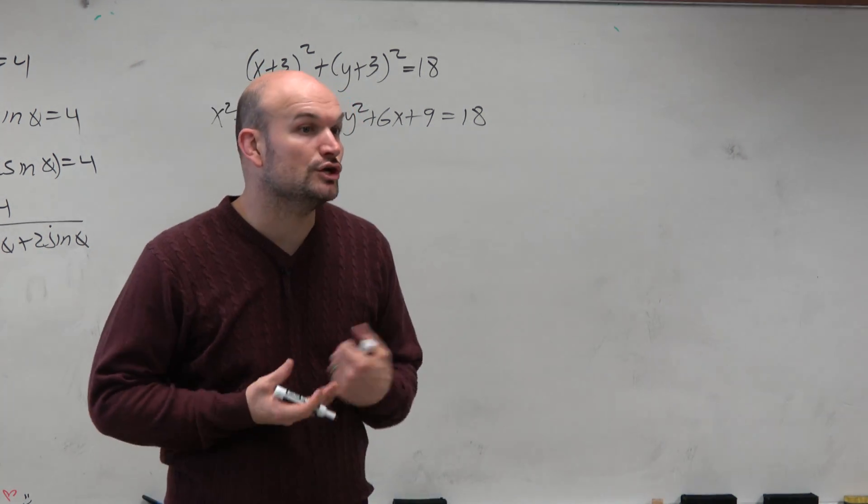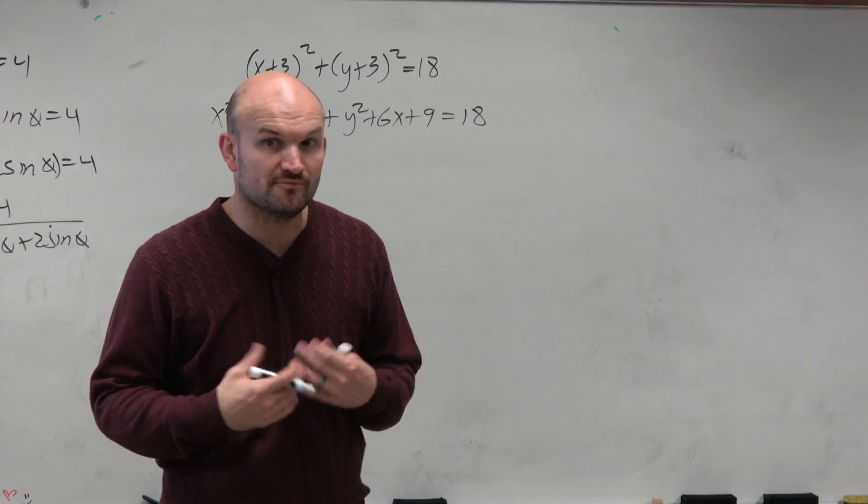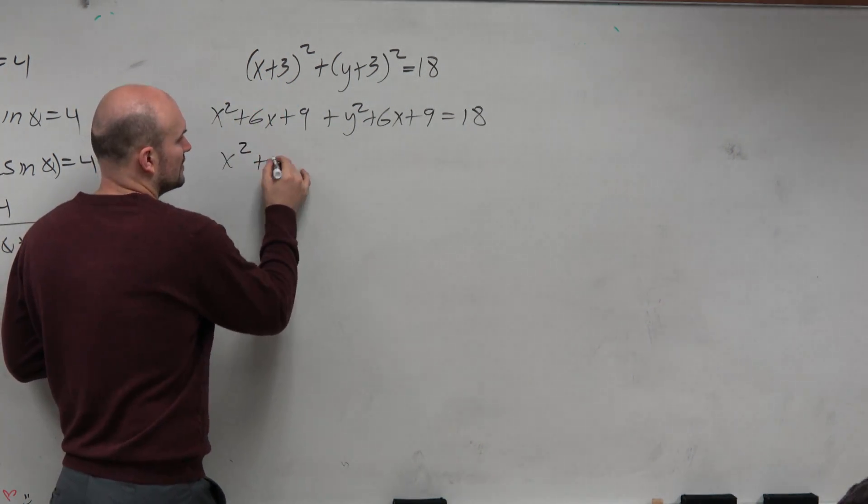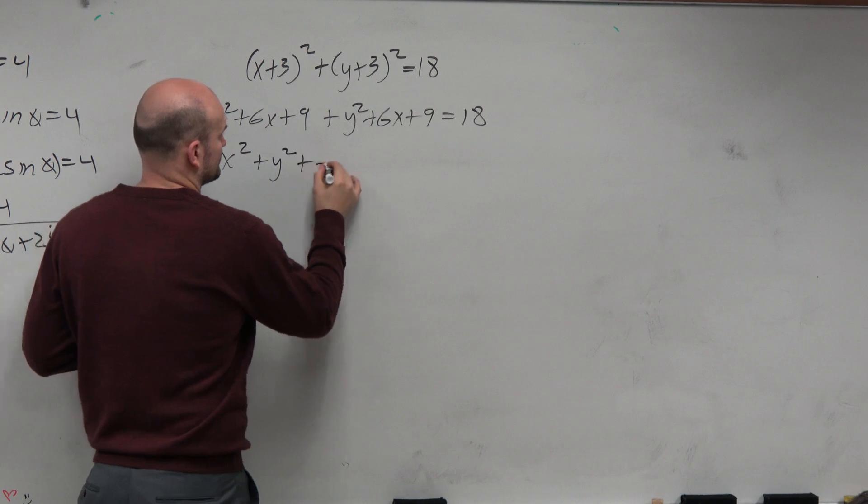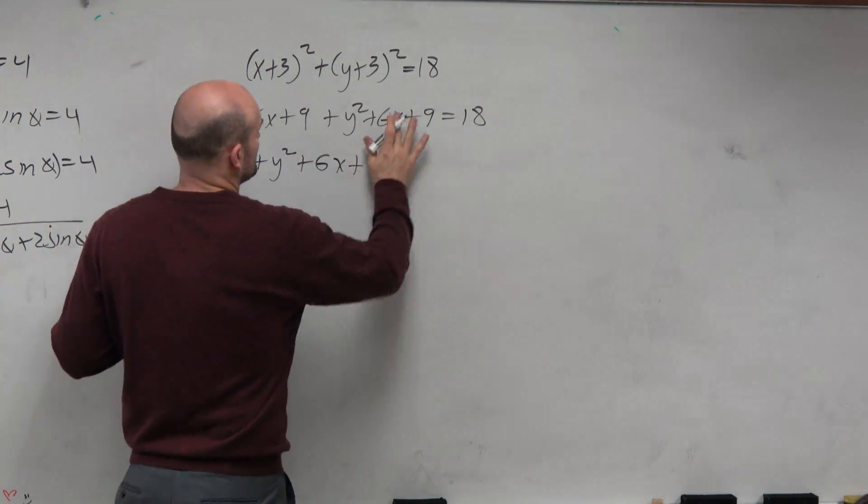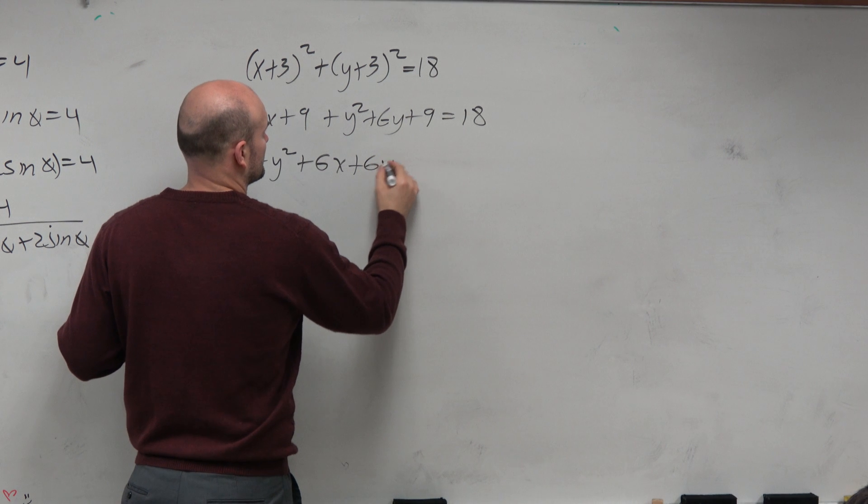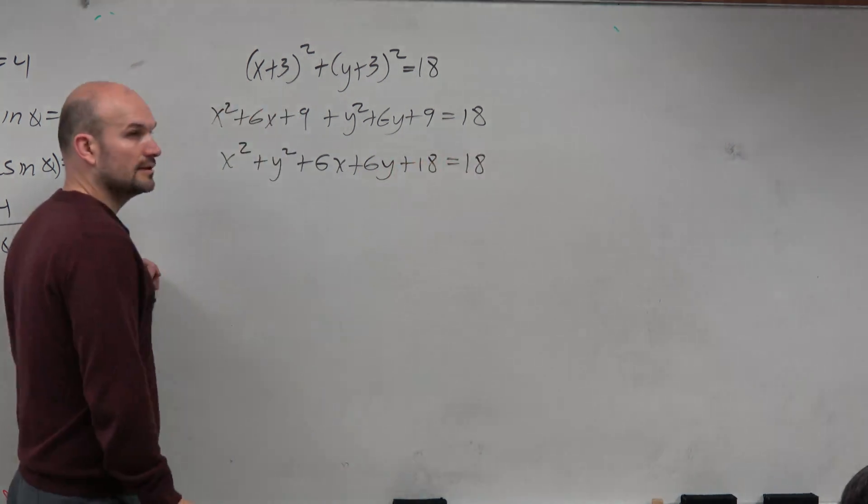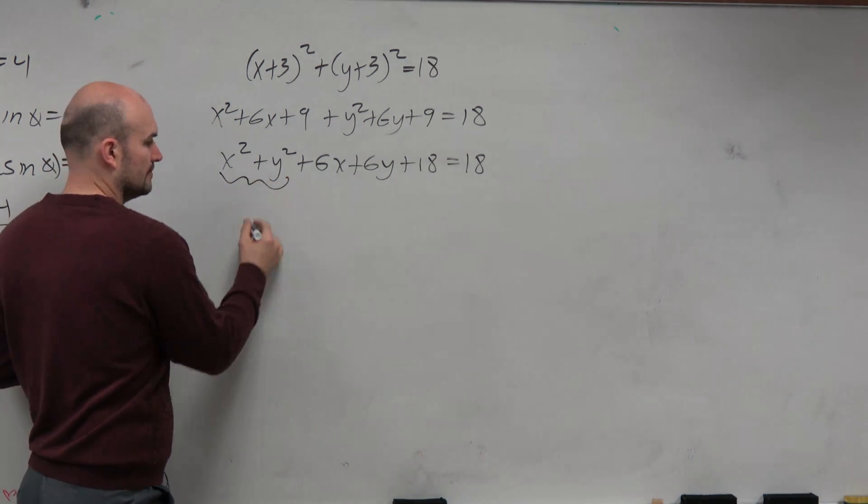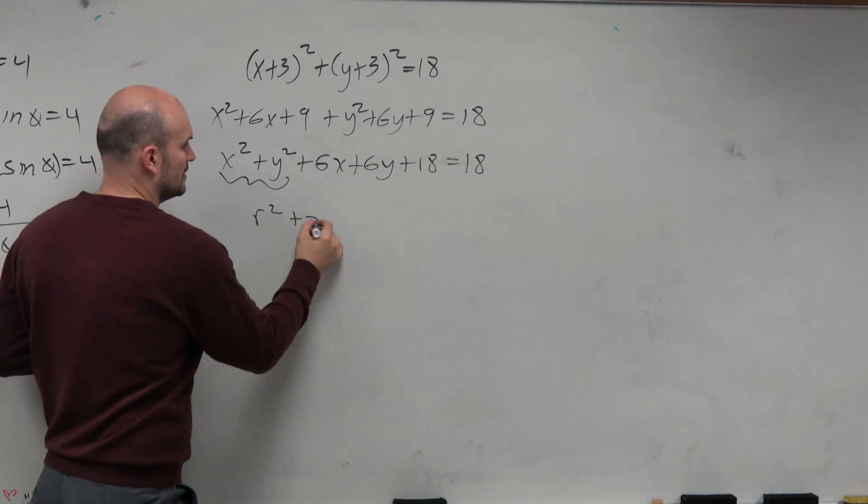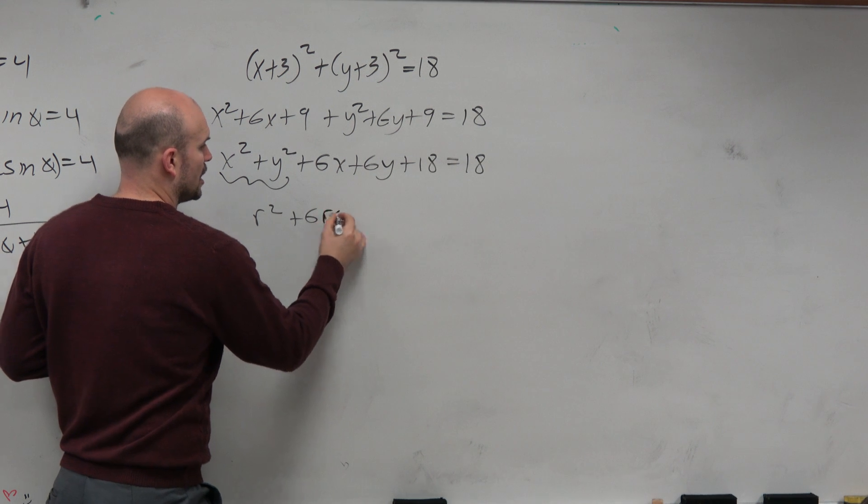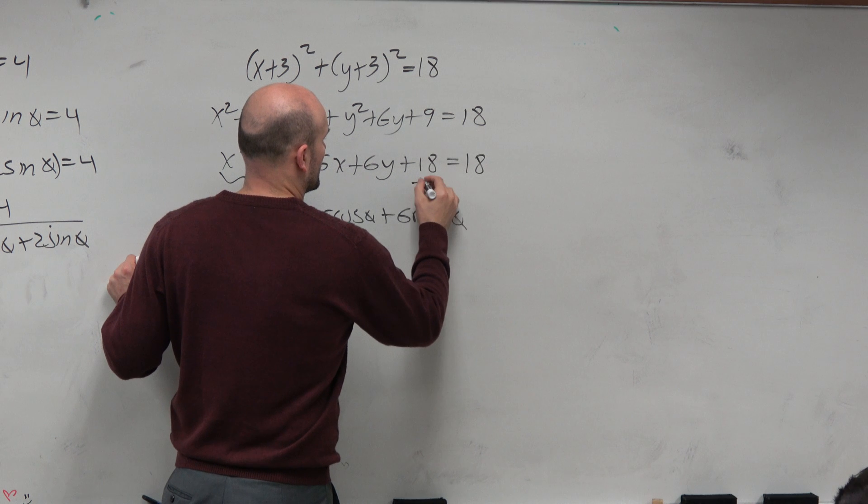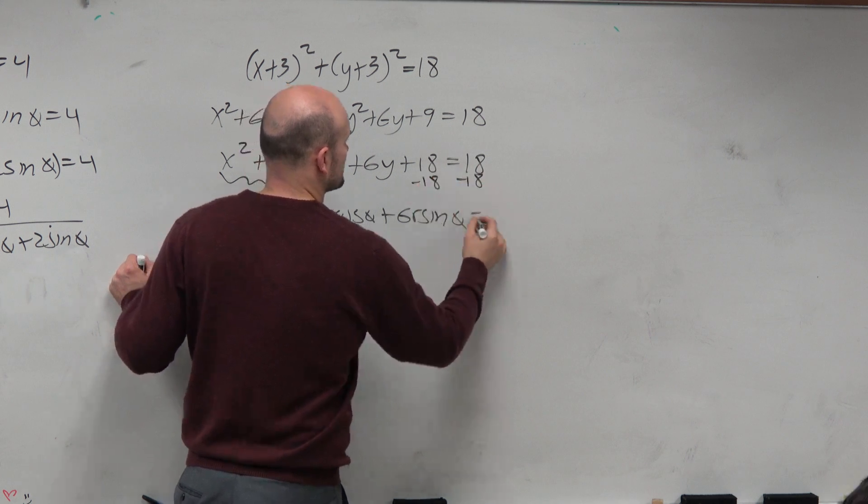Now, in this case, again, my goal is to rewrite this in terms of polar, in terms of r's and thetas. So what I'm going to do now is I'm just going to group everything with the x squared with the y squareds. So that's r squared plus 6r cosine theta plus 6r sine theta. And we can subtract an 18 on both sides. Equals zero.